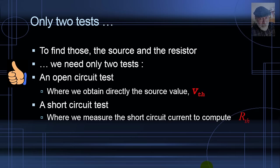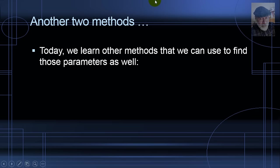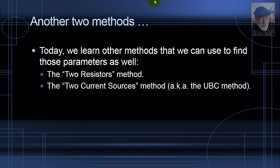Measuring the open circuit voltage of a port is fine, and we can even do that in a laboratory. But short circuiting the port of a live circuit may not be such a good idea. Today, we learn other methods that we can use to find those two parameters: the two resistors method and one method, the two current sources method, that I call sometimes the UBC method.